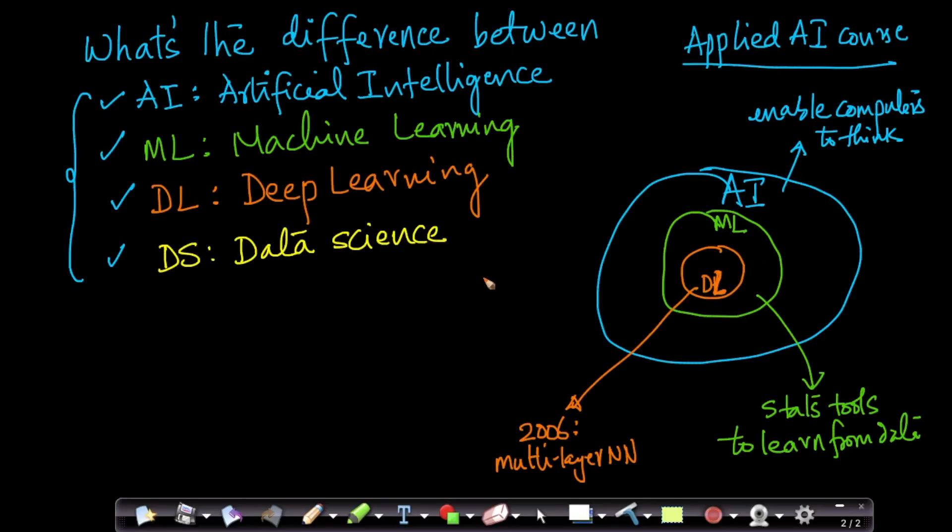And what about data science? That's an obvious question we keep getting asked. So data science is a completely different area which intersects. So if I call this as data science, data science has some overlap with AI techniques, with machine learning techniques, not so much with deep learning techniques.